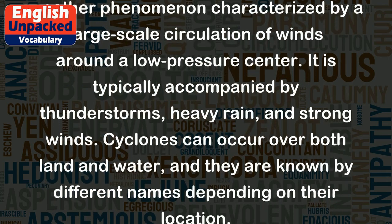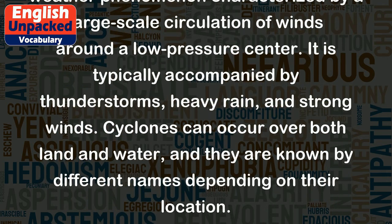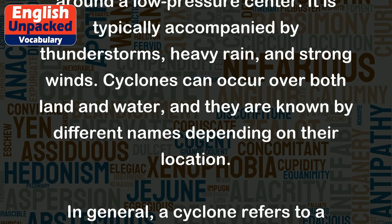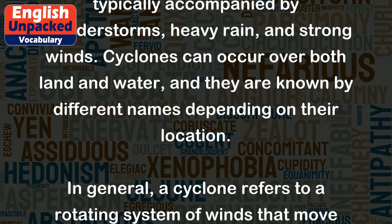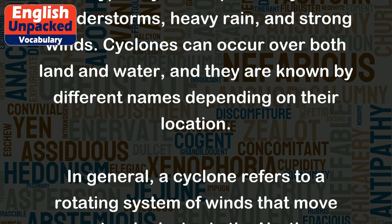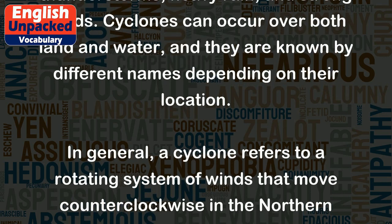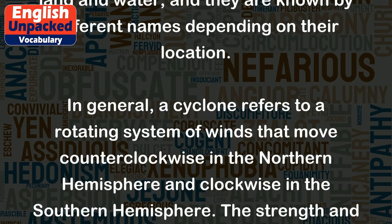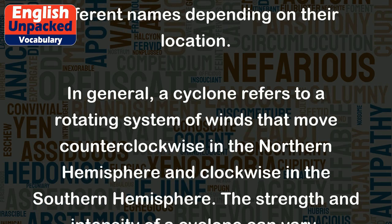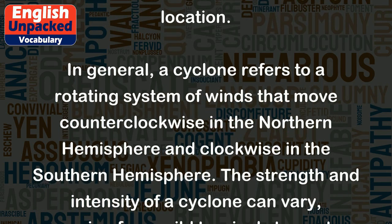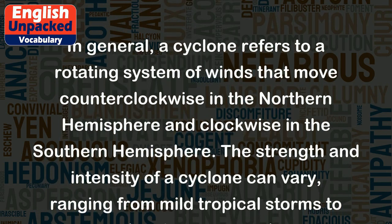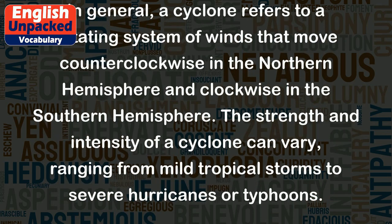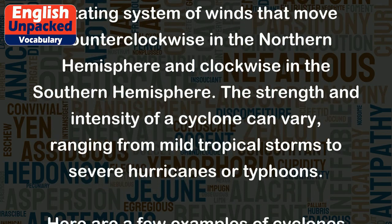Cyclones can occur over both land and water, and they are known by different names depending on their location. In general, a cyclone refers to a rotating system of winds that move counterclockwise in the Northern Hemisphere and clockwise in the Southern Hemisphere. The strength and intensity of a cyclone can vary, ranging from mild tropical storms to severe hurricanes or typhoons.